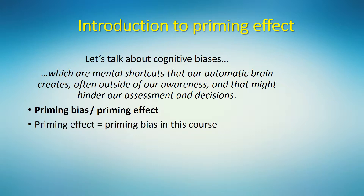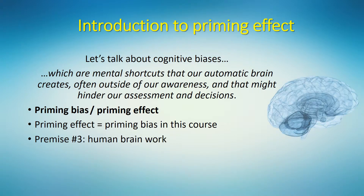Before I explain the bias itself, let's look at another theoretical premise on cognition. Premise number three is as follows: the human brain works in an associative way. Literally, everything is interconnected in your neural system.